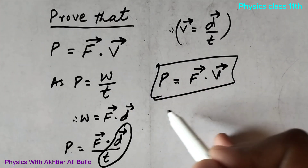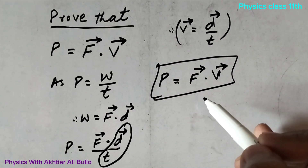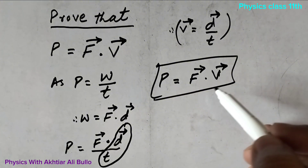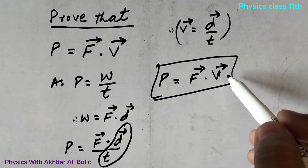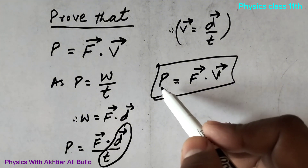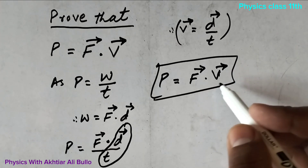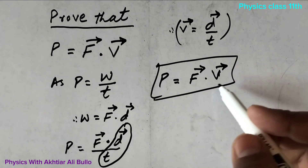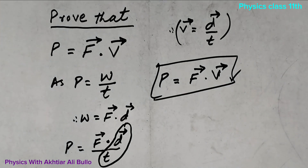So we can also define power as the dot product of force and velocity, which is also known as power. This is our required condition.